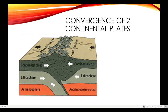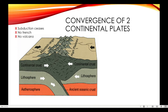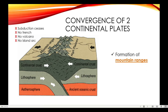The third type of convergent plate boundary is the convergence of two continental plates. When two continental plates converge, a collision zone is formed. Unlike the other two types of convergent boundaries, subduction ceases for this particular type. No trench, no volcano, and no island arc are created during this process. Instead, what is created is a large group of tall mountains called mountain ranges. Shallow earthquakes also occur during this process.